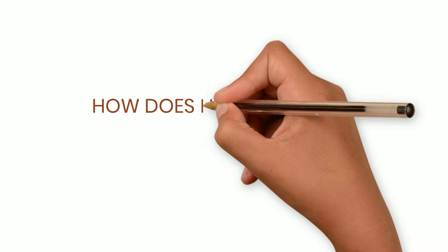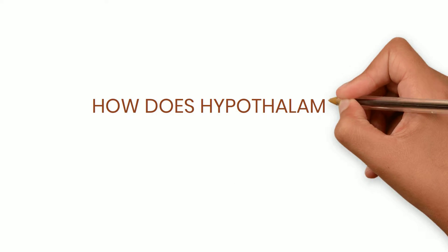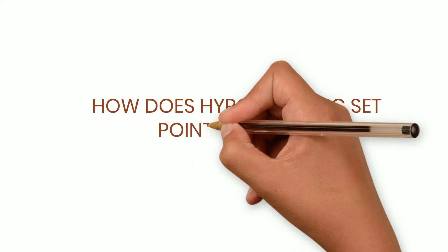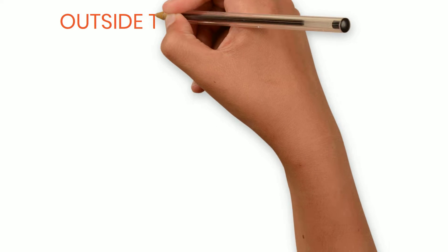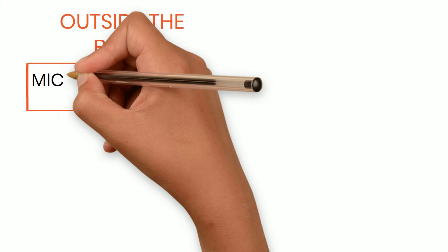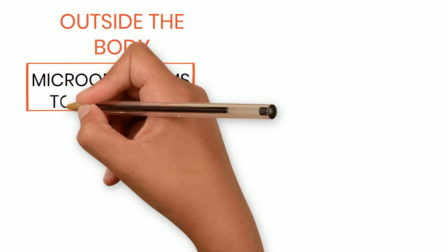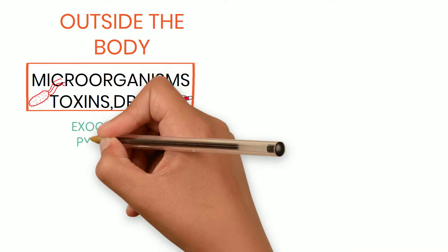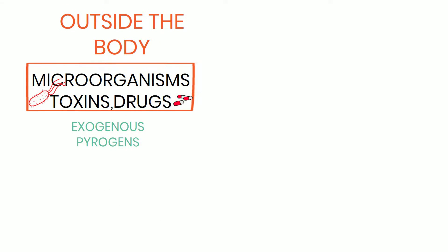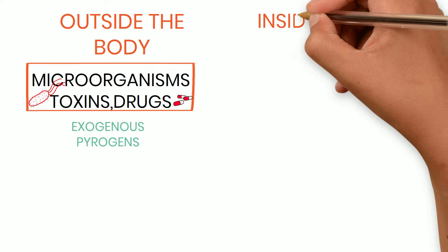So how does this hypothalamic set point increase? In other words, what are the causes of fever? Causes could be outside the body, like micro-organisms, their toxins, or drugs — these are called exogenous pyrogens. Or the causes could be from inside the body.